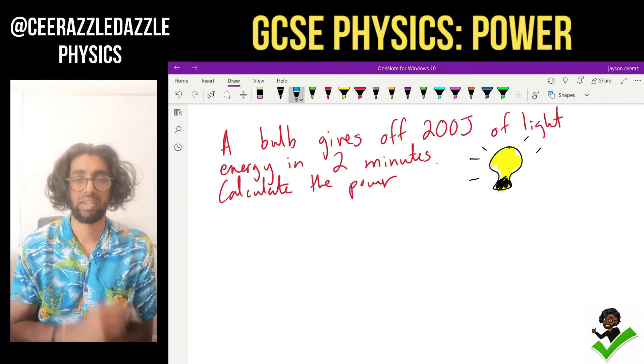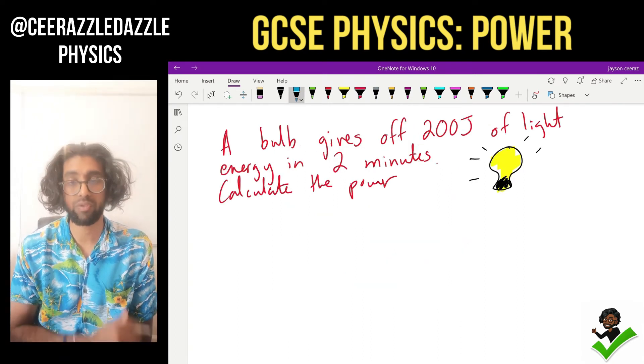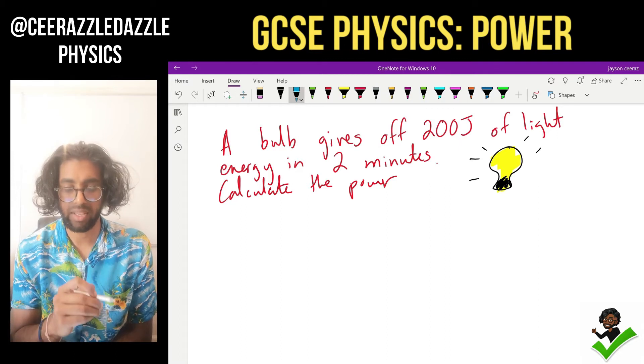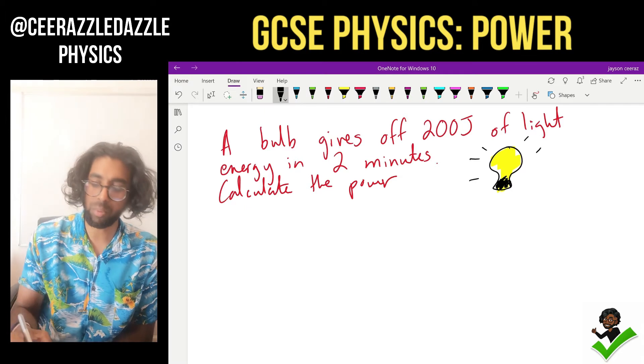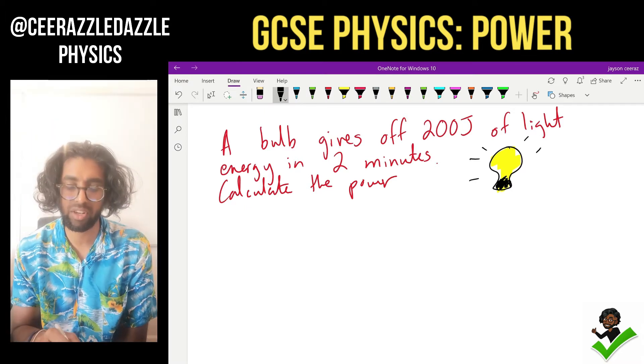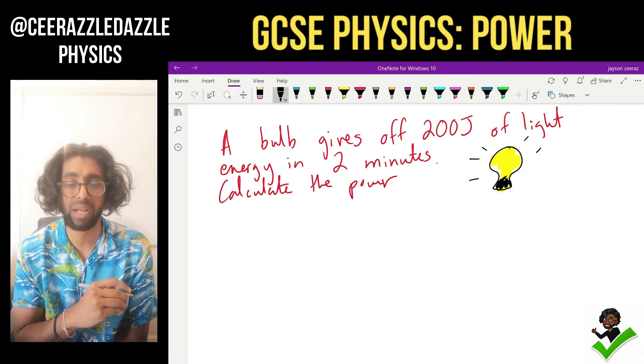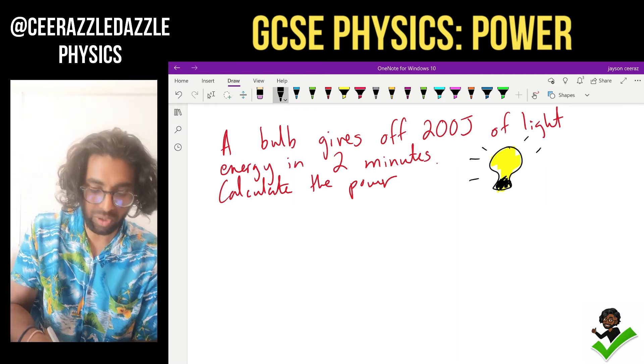Example one. A bulb gives off 200 joules of light in two minutes. Calculate the power. Step number one. Write down the equation.